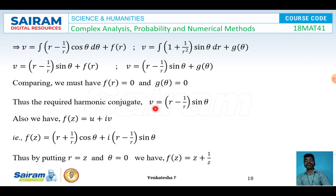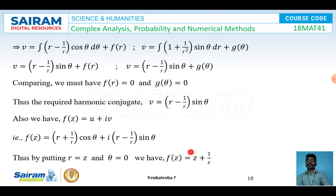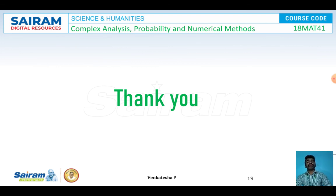Therefore v = (r − 1/r)sin θ is the harmonic conjugate. The analytic function f(z) = u + iv = (r + 1/r)cos θ + i(r − 1/r)sin θ. Putting r = z and θ = 0: f(z) = z + 1/z. In the next lecture video I will be discussing Type 4 problems. Thank you.